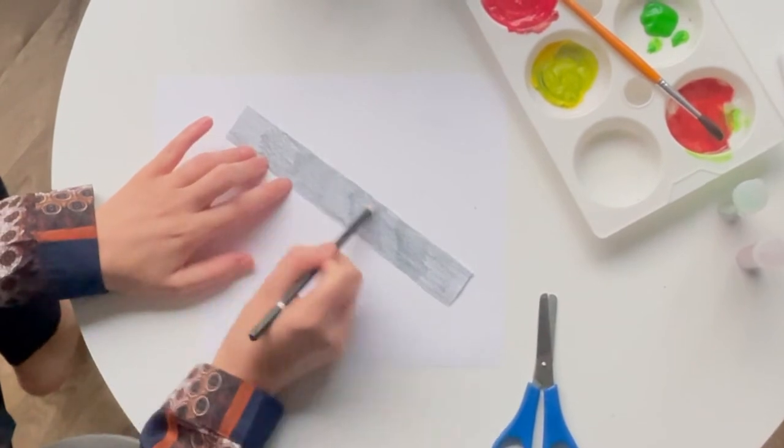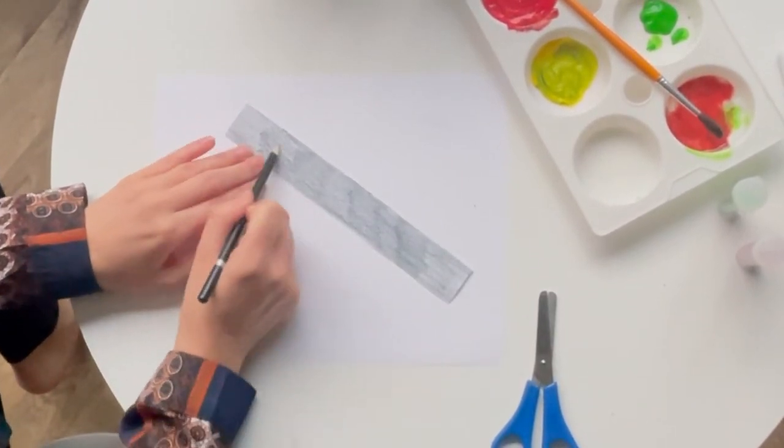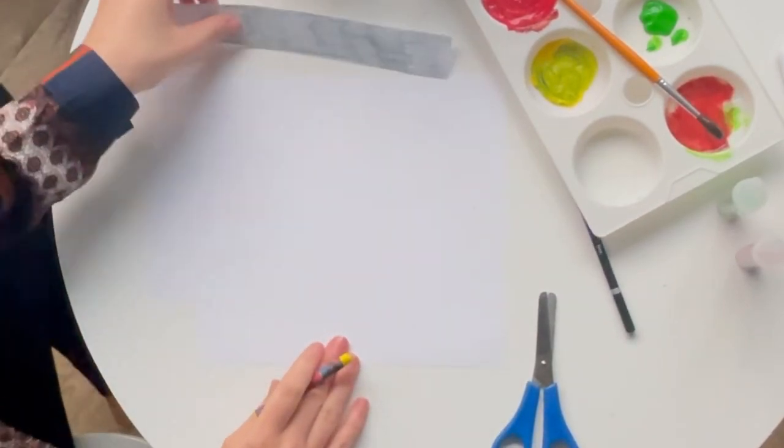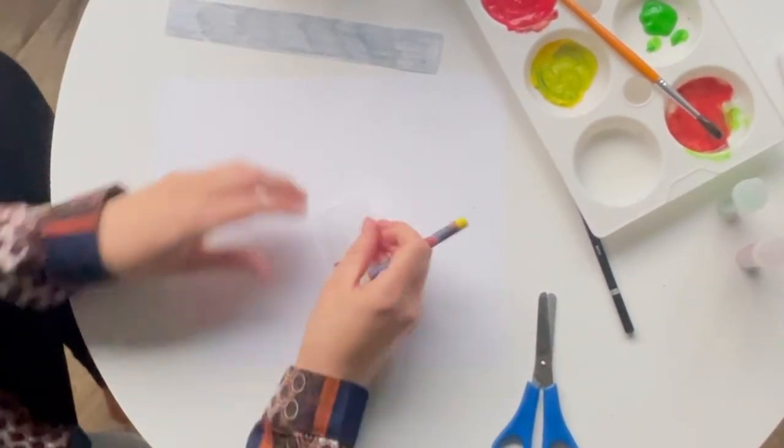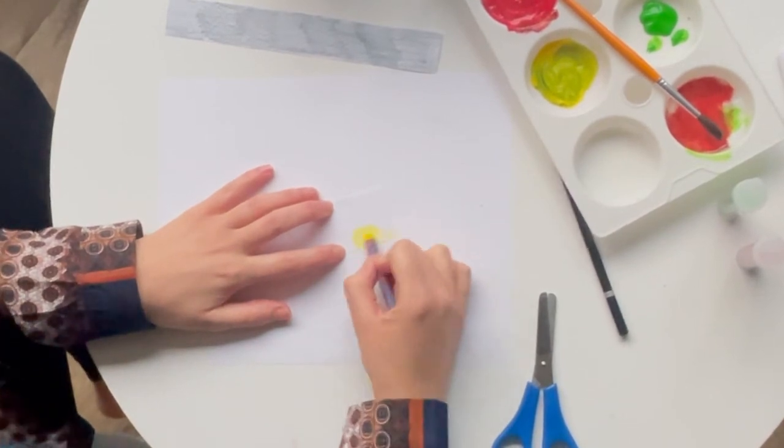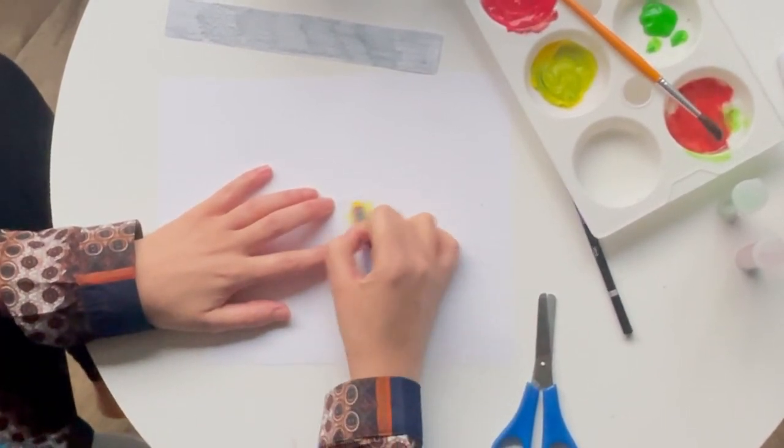First of all, cut a slice of your A4 paper into a rectangle shape like this and color it in black. Then cut yourself a square out of your A4 paper and color it in yellow just like this.